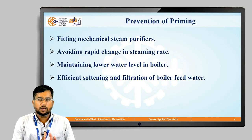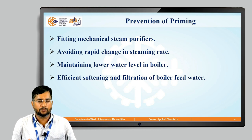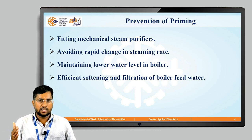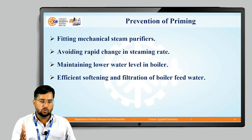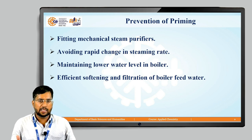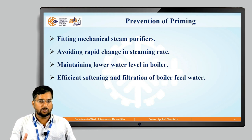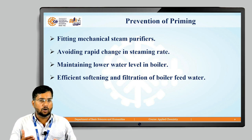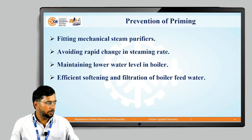To prevent priming, we can fit mechanical steam purifiers at the outlet — these remove water droplets from the steam and produce high-quality steam. We should avoid rapid changes in steaming rate and maintain a lower water level in the boiler. Also, by efficient softening and filtration of boiler feed water, we can avoid the formation of priming.